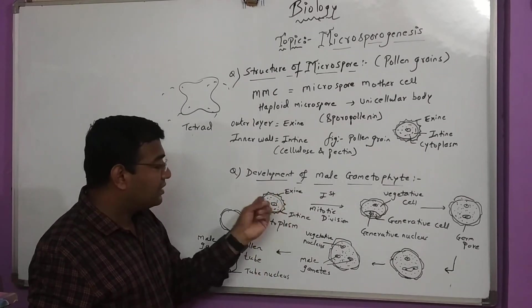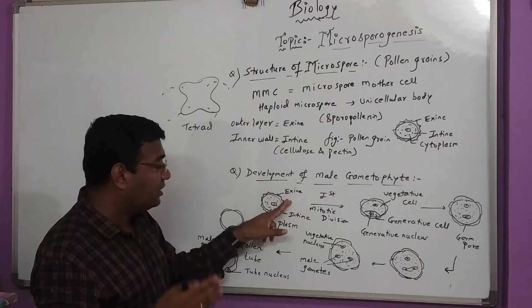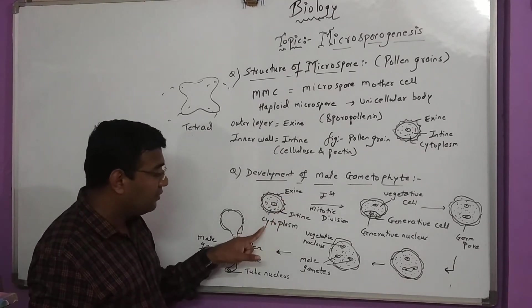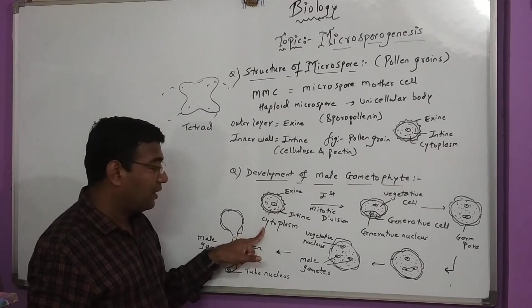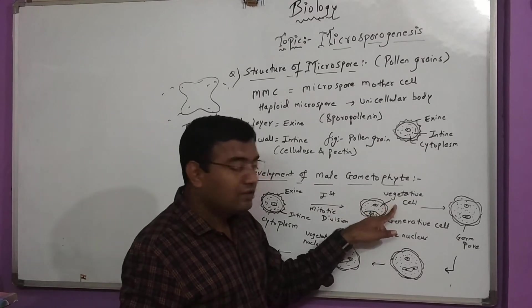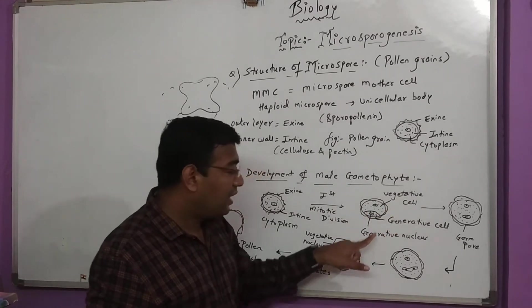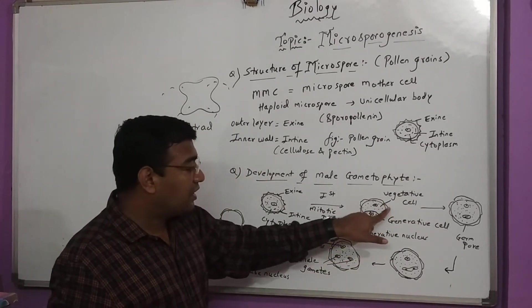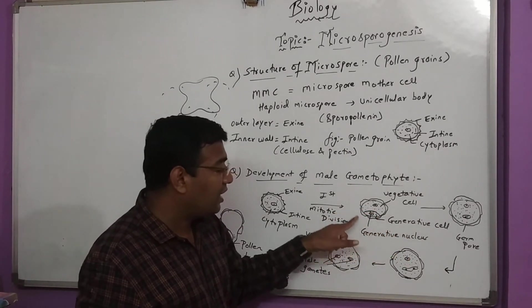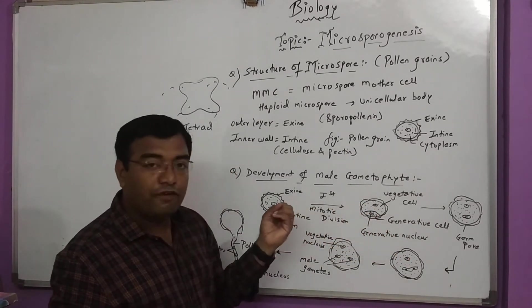The exine gets ruptured in the final stage with the help of a germ pore. The outer layer is exine, inner wall is intine, and the jelly-like fluid is cytoplasm. After the first mitotic division, it forms a vegetative cell and a generative cell. The vegetative cell has a single nucleus, and the generative cell has a fine wall with a generative nucleus inside.